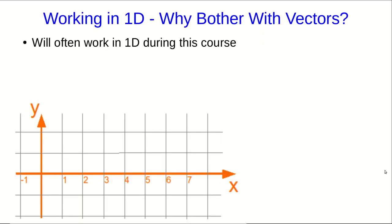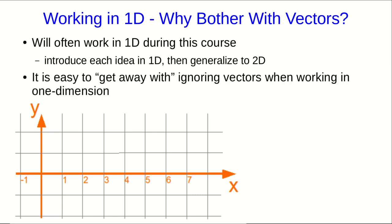We're often going to be working in one dimension during this course. That's because it really makes very little difference to the physics, whether we're in 1D or higher dimensions, and so I will tend to introduce each idea in one dimension and then generalize it to 2D later. Now, it's easy to get away with ignoring vectors when you're working in one dimension, but I'm going to say you shouldn't try to get away with it, and I'm not going to. I am going to stick to good vector notation even when I'm working in one dimension. I want to show you why.